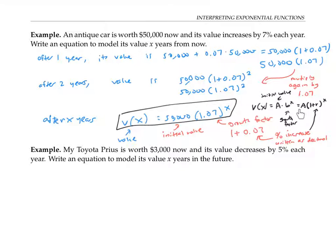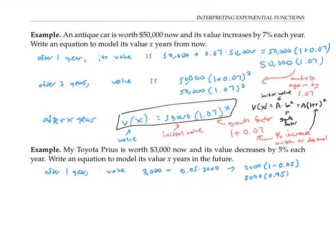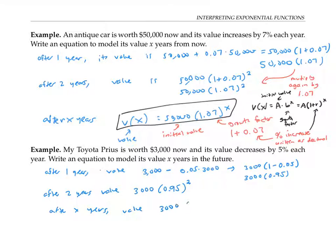This same equation will come up in the next example. My Toyota Prius is worth only $3,000 now, and its value is decreasing by 5% each year. So after one year, its value will be 3,000 minus 0.05 times 3,000, which is 3,000 times (1 − 0.05), or 3,000 times 0.95. After two years, the value will be multiplied by 0.95 again, so the value will be 3,000 times 0.95 squared.